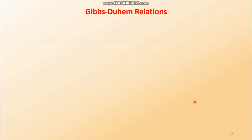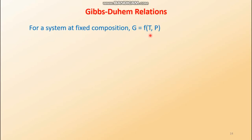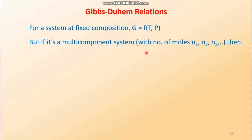Let's start with Gibbs-Duhem relations. For a system at fixed composition, the free energy G must be a function of temperature and pressure — that applies to a single-component system. But if it's a multi-component system with number of moles n1, n2, n3, etc., then G is not only a function of temperature and pressure but also becomes a function of n1, n2, n3, etc.